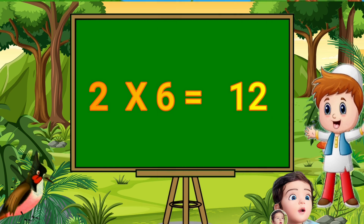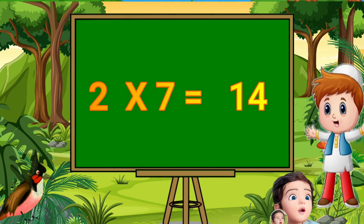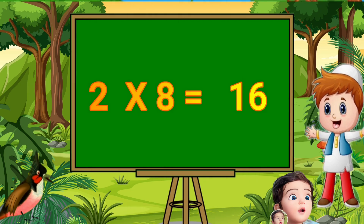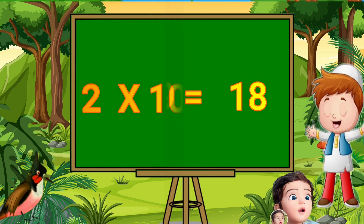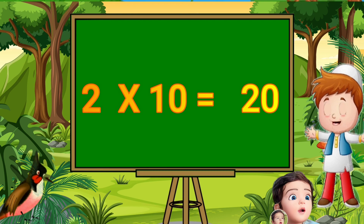Two sixes are twelve. Two sevens are fourteen. Two eights are sixteen. Two nines are eighteen. Two tens are twenty.